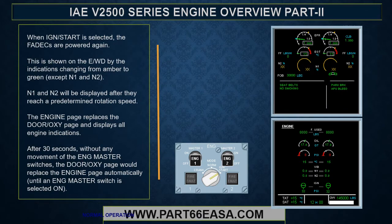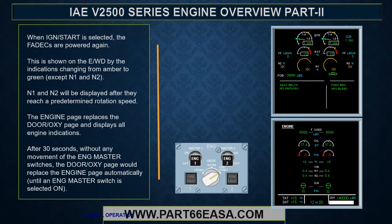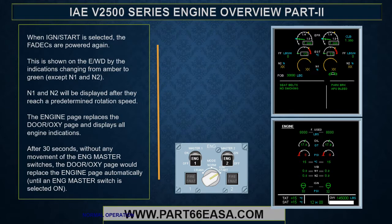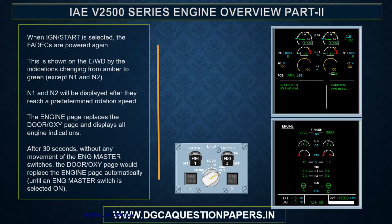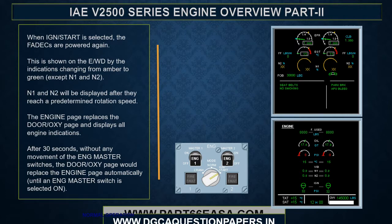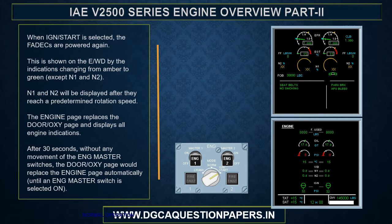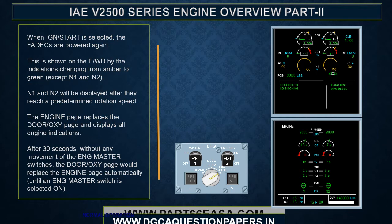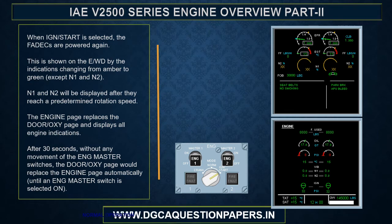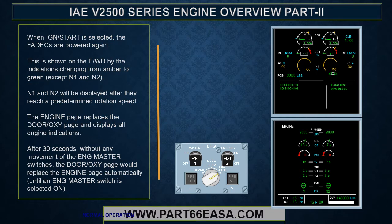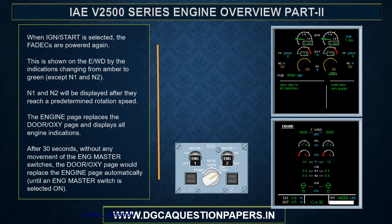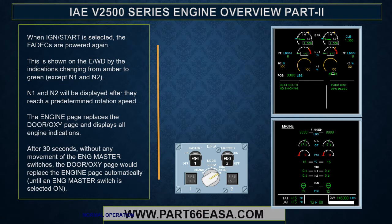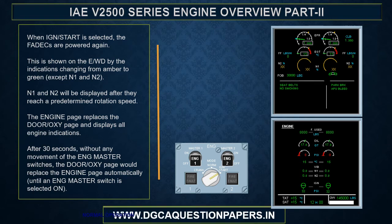When ignition start is selected, the FADECs are powered again. This is shown on the EWD by the indications changing from amber to green, except for N1 and N2. N1 and N2 will be displayed after they reach a pre-determined rotation speed. The engine page replaces the door oxy page and displays all the engine indications.